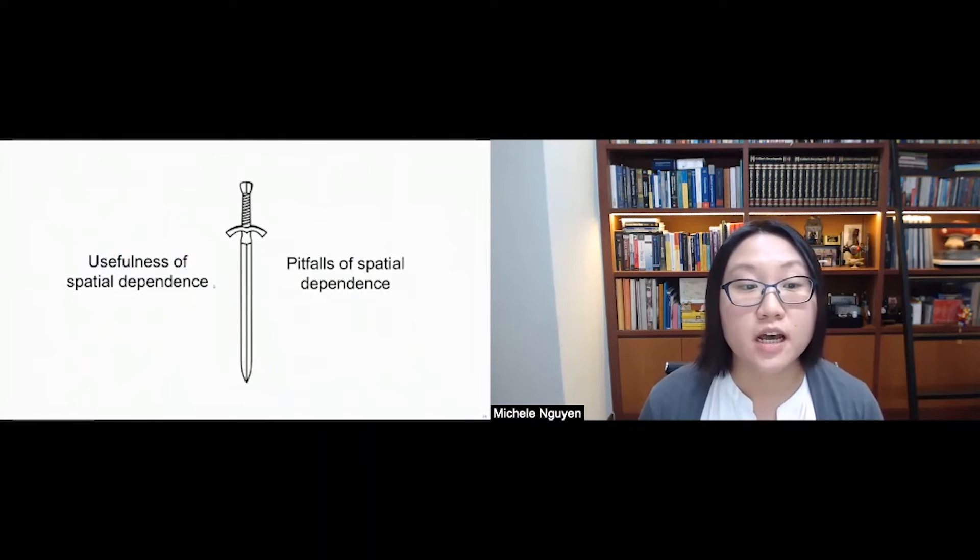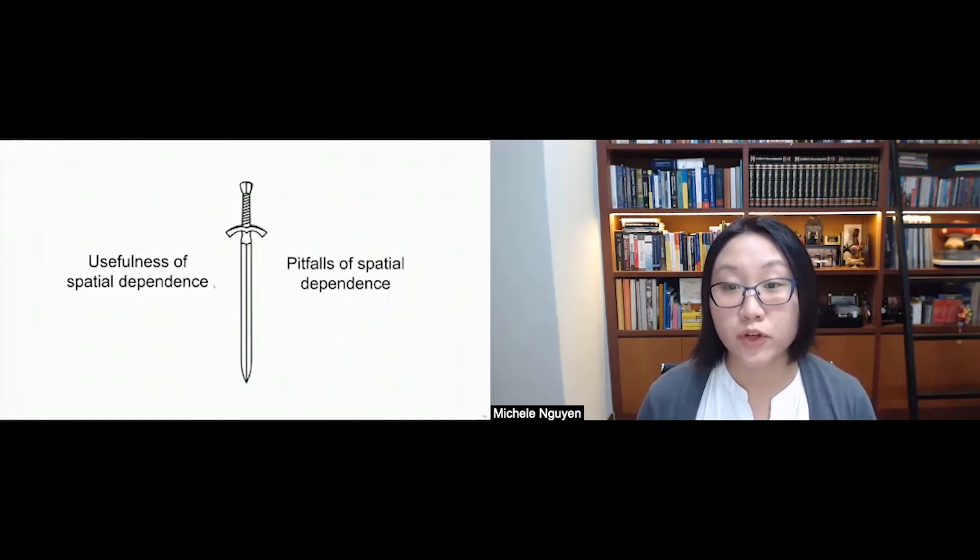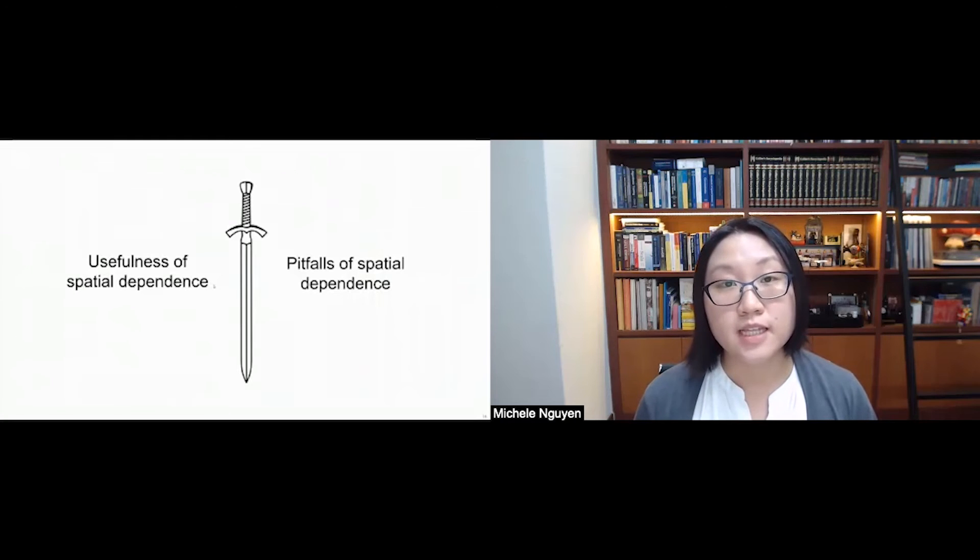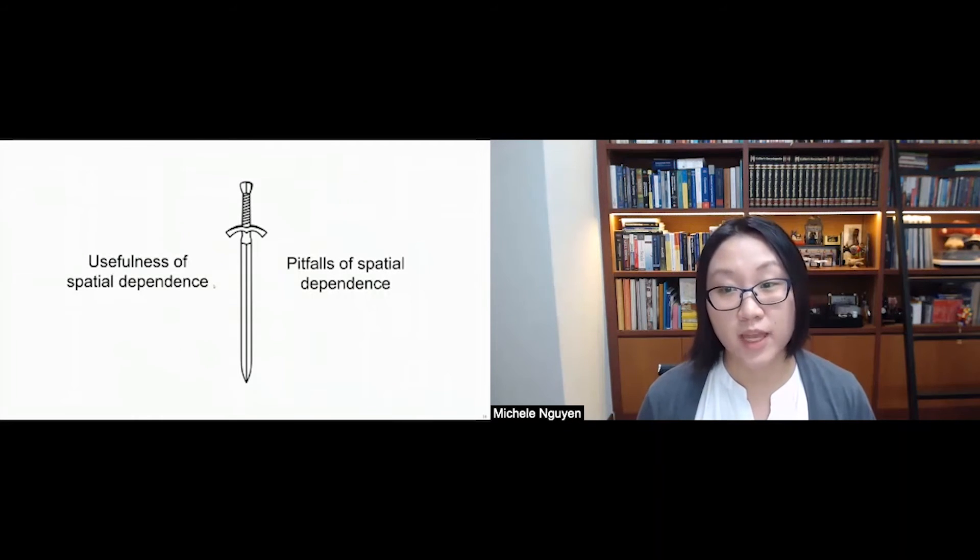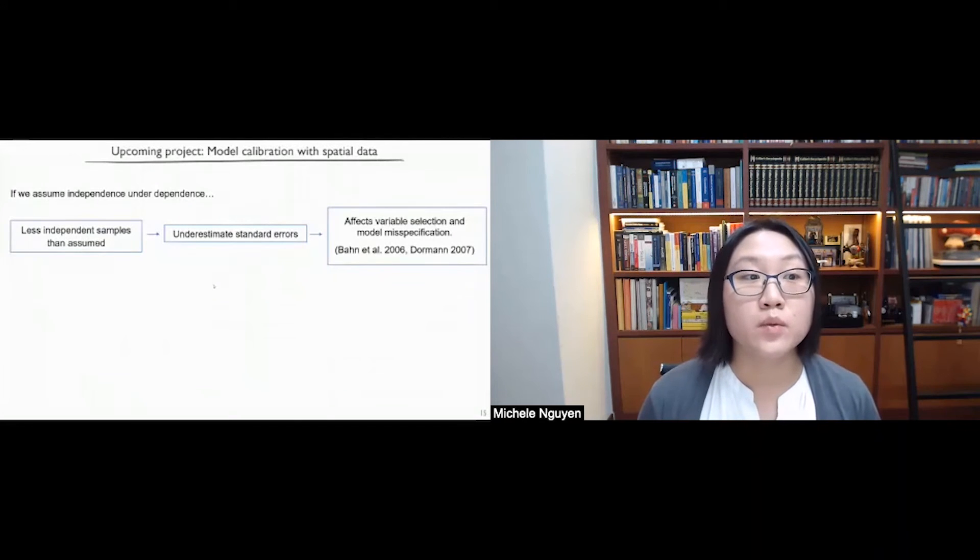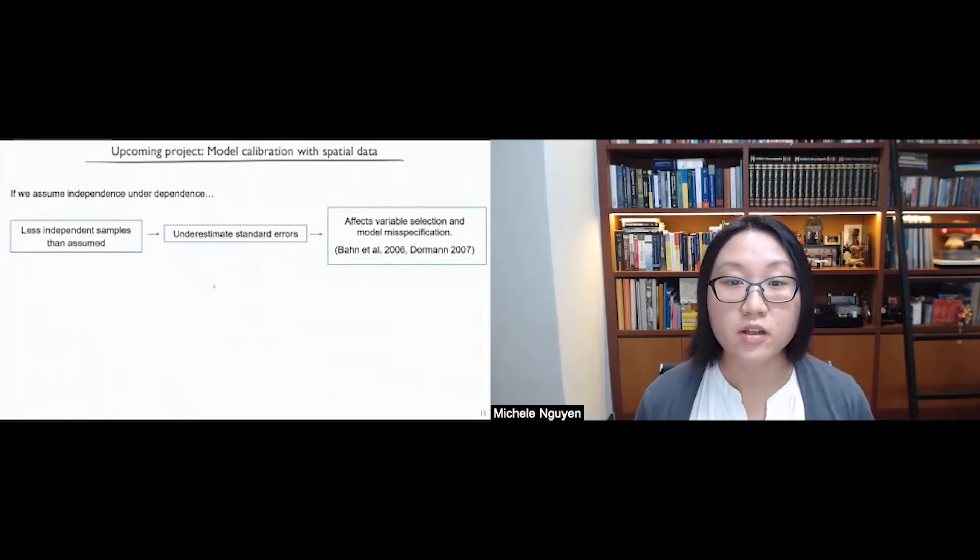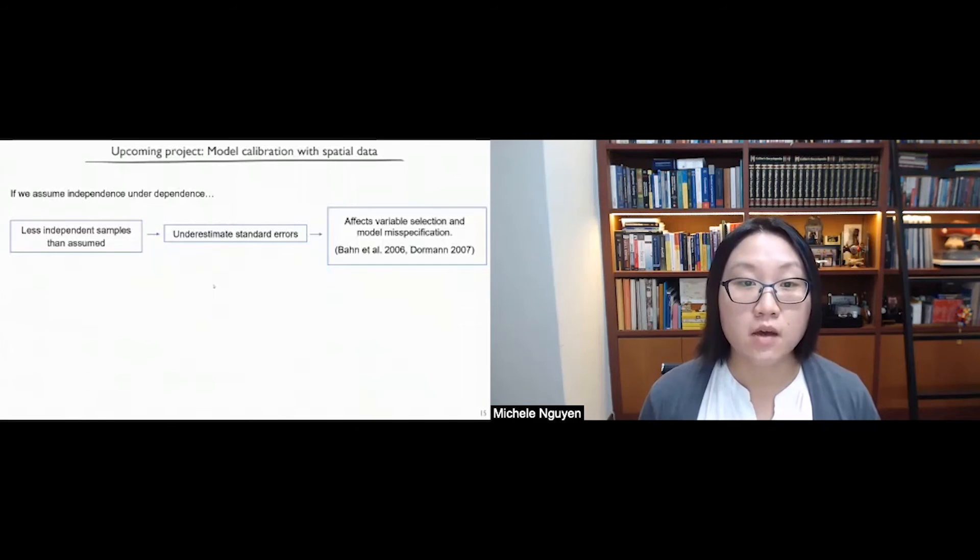Spatial correlation and modeling spatial dependence has been useful for our prediction, but it is a double edged sword. Studies have also shown that there are underappreciated consequences of neglecting spatial dependence when it is present. Specifically, when we assume that we have independence, we are actually making the assumption that the more data that we gather, the better we can estimate whatever process that we are interested in by improving its accuracy as well as precision. However, when there's actually dependence, then we have less independent samples than we are assuming. And this would lead us to overstate our confidence and underestimate our standard errors and could potentially also affect variable selection and lead to model mis-specification.